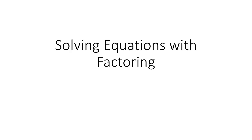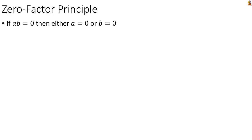We're going to discuss how to solve equations using factoring. This is one of the most common things that we do with the factoring techniques we've learned so far. At the core of this lies a notion called the zero factor principle, which says that if ab equals 0, then either a equals 0 or b equals 0.